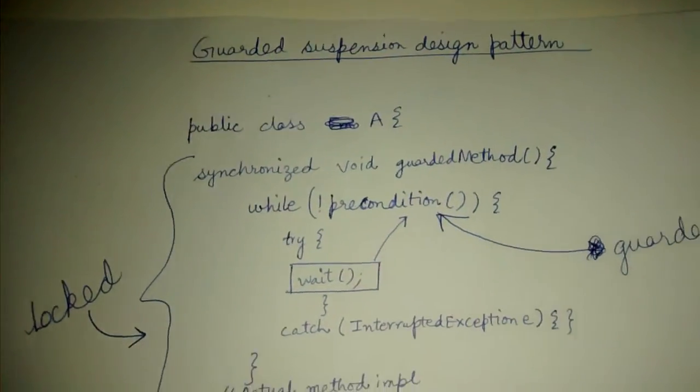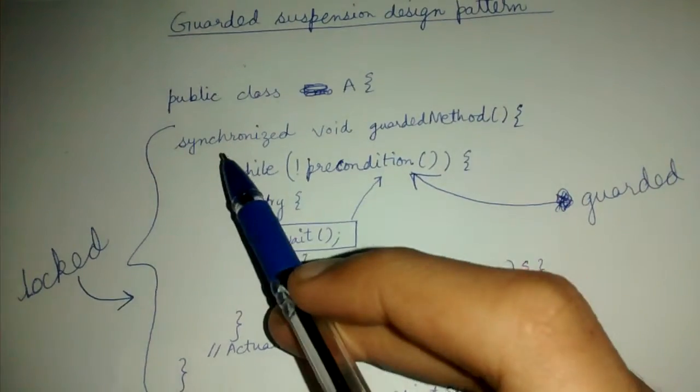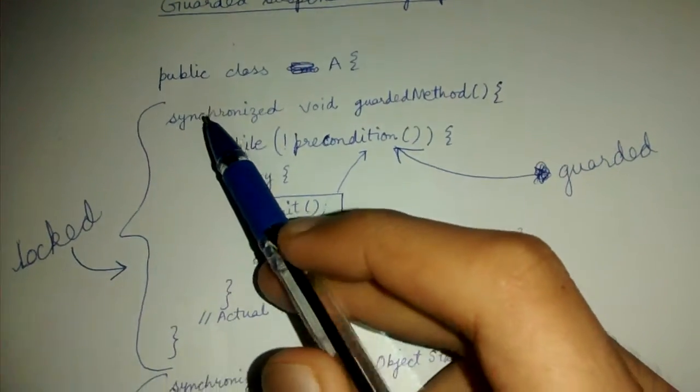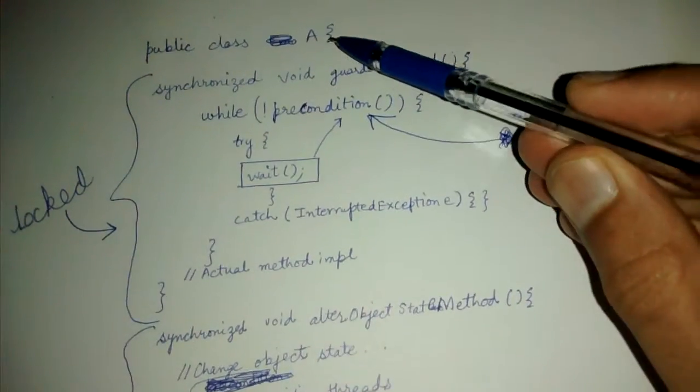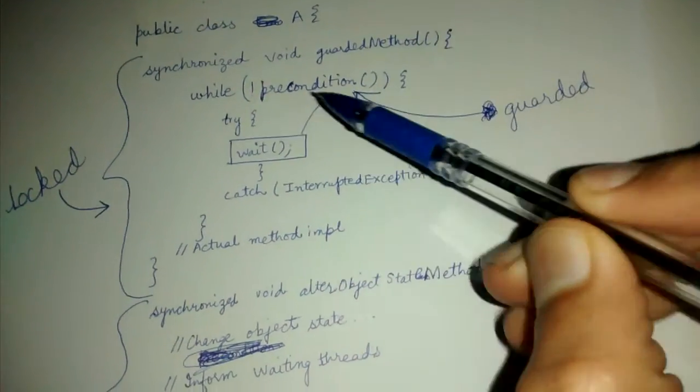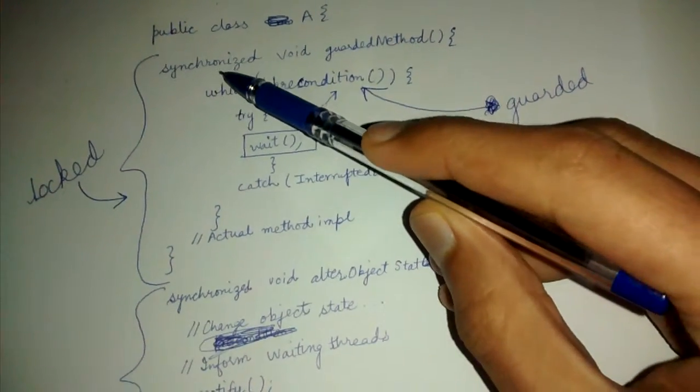So today we will be looking very briefly at the guarded suspension design pattern. According to this design pattern, let's assume there is a class A and there is a guarded method which is synchronized.